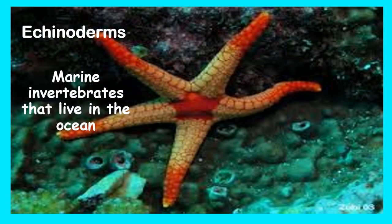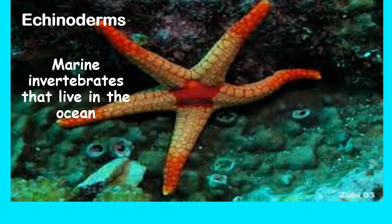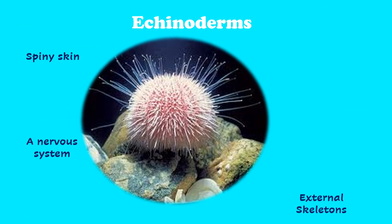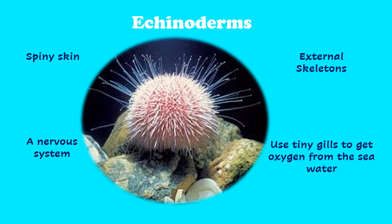Let's dive right in. What are enkinoderms? Enkinoderms are marine invertebrates that live in the ocean. If you examine an enkinoderm, you will notice that they have spiny skin, they have a nervous system, they have external skeletons, and they use tiny gills to get oxygen from the seawater.